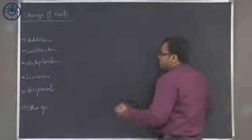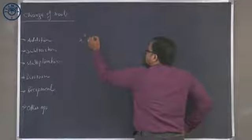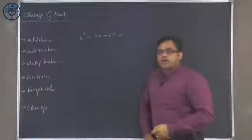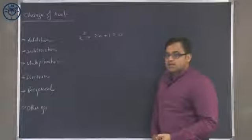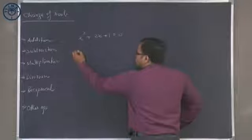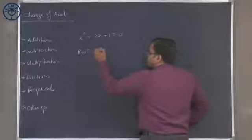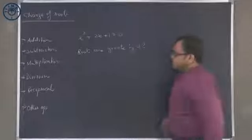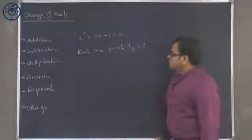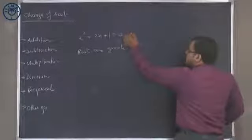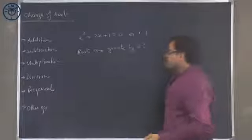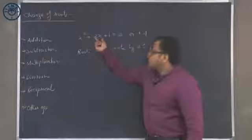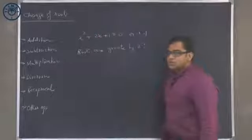Let us say I am given an equation x squared plus 2x plus 1 is equal to 0. This is x plus 1 whole square, so x equals minus 1. The roots are minus 1 and minus 1.